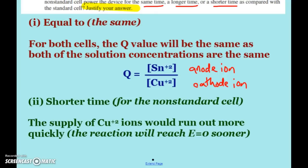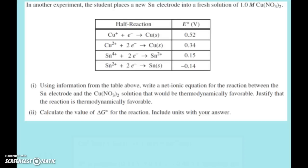So you can talk about it that way, that the non-standard is going to run shorter because your supply of ions or your supply of copper ions is going to run out quicker, aka the reaction will reach E equals zero much, much sooner. Alright, the last parts to this question. In another experiment, the student places a new tin electrode into a fresh solution of one molar copper nitrate. Okay, so without the salt bridge, we're just like plopping in the electrode into the solution. Using information from the table above, write a net ionic equation for the reaction between the tin electrode and the copper nitrate solution. And of course, we want one that would be thermodynamically favorable, which means we would have a positive E naught value. Justify that the reaction is thermodynamically favored.